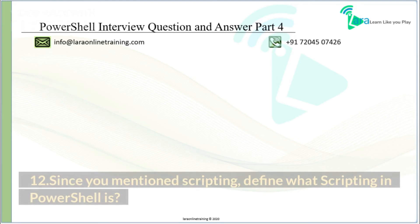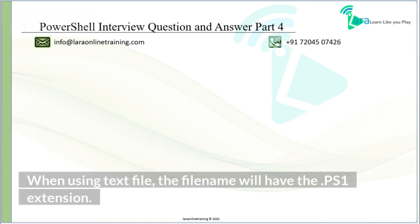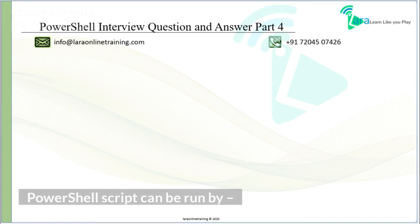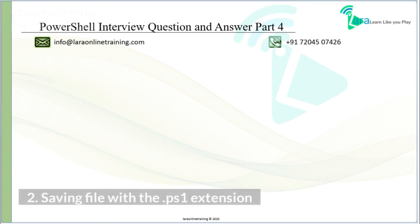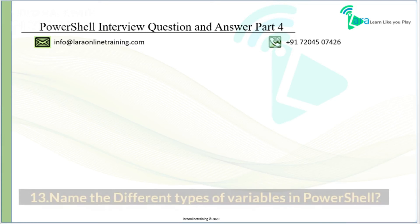Define what scripting in PowerShell is. PowerShell files contain an array of commands, where each command appears on a separate line. When using a text file, the file name will have the .ps1 extension. A PowerShell script can be run by: 1. Typing commands in a text editor, 2. Saving the file with the .ps1 extension, 3. Executing the file.